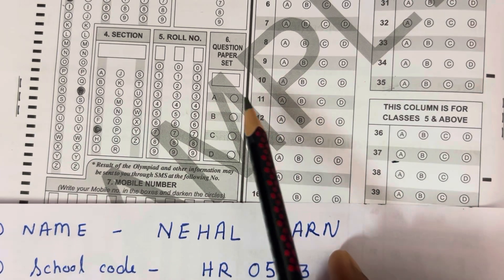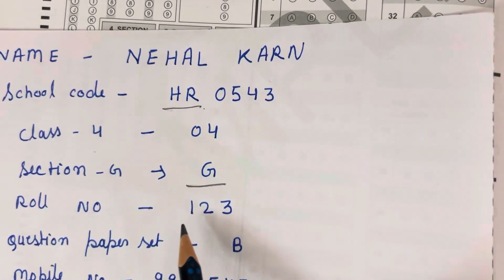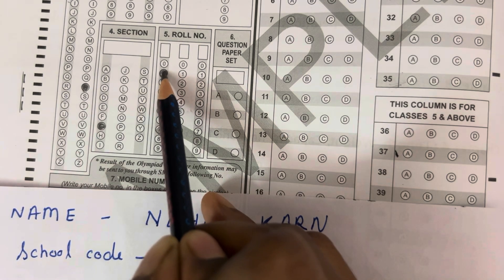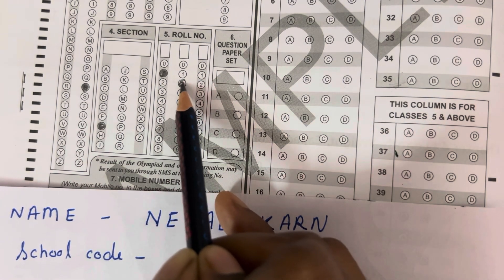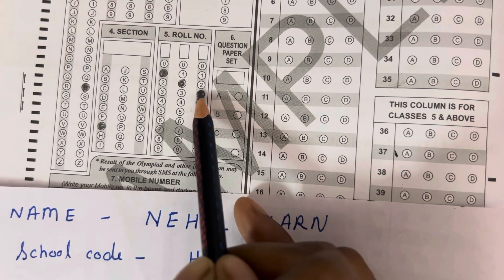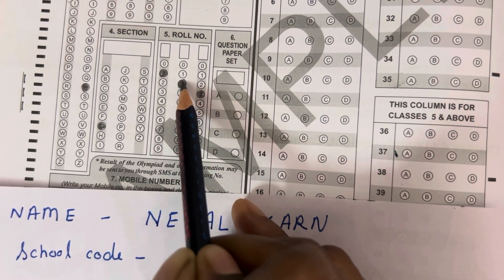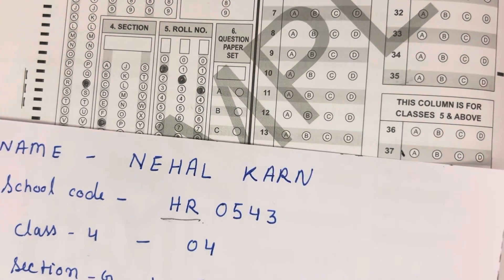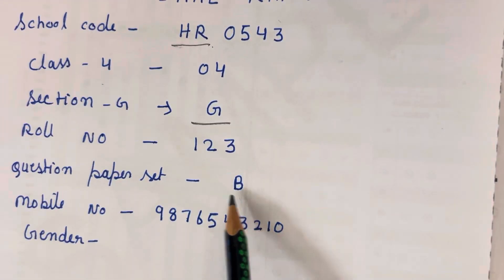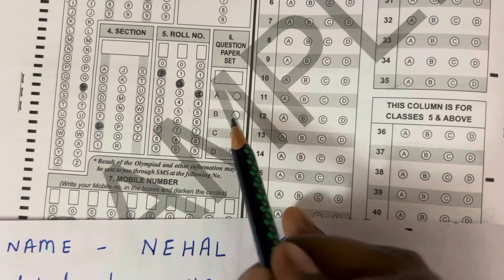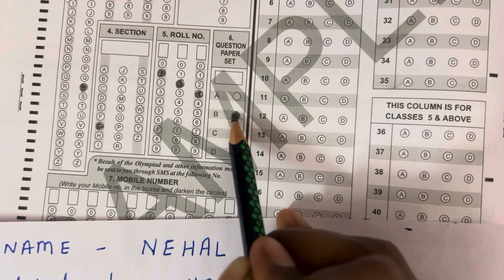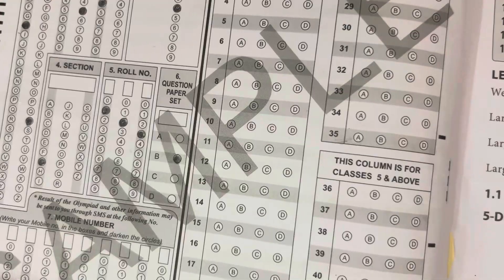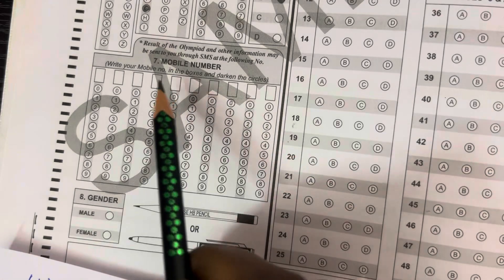The next field is roll number. If your roll number is 123, then in the first row fill 1, then 2, then 3. And the sixth field, which is very important, is the question paper set. If your question paper set is B, then you will have to fill B.